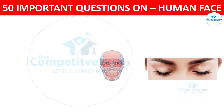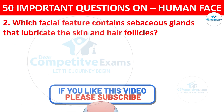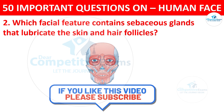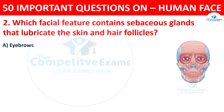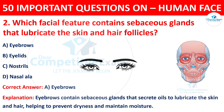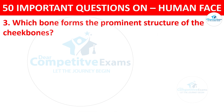Question number two: which facial feature contains sebaceous glands that lubricate the skin and hair follicles? The options are eyebrows, eyelids, nostrils, or nasal ala. The correct answer is A, eyebrows. Eyebrows contain sebaceous glands that secrete oils to lubricate the skin and hair, helping to prevent dryness and maintain moisture.